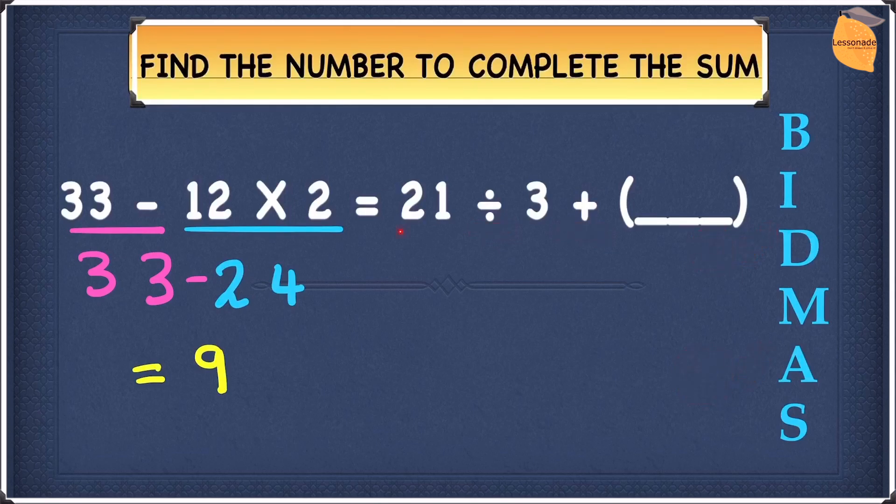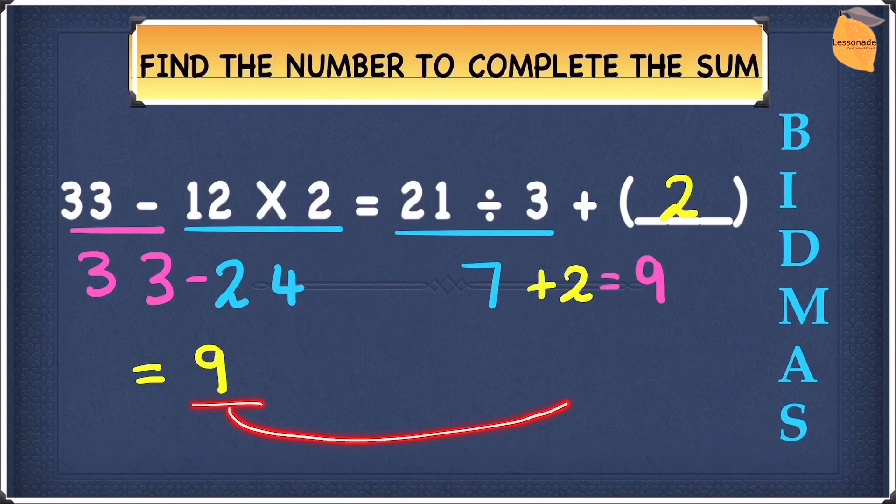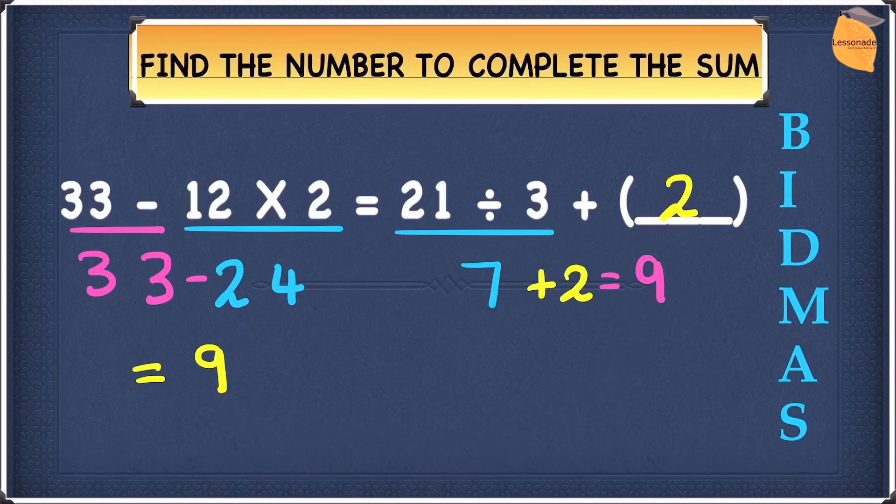So we will do 21 divided by 3 first. 21 divided by 3 gives you 7. Now we need to add something to 7 to give us 9. The number we need to add to 7 to give us 9 is obviously 2, because 7 plus 2 gives you 9. Now both sides equal 9, so they're equal. I hope you understood this question.